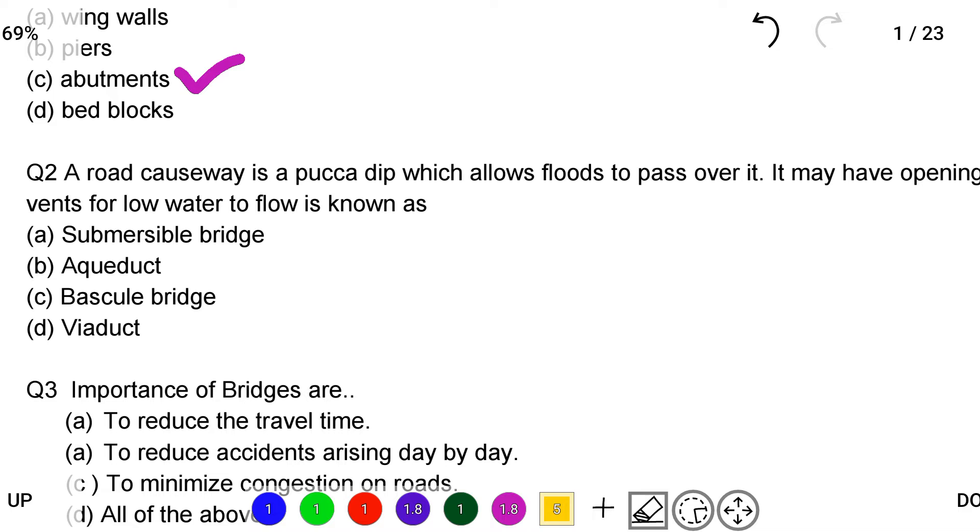Next question: a road causeway is a pucca dip which allows floods to pass over it. It may have openings or vents for low water to flow is known as option A submersible bridge, option B aqueduct, option C bascule bridge, option D viaduct. So the correct answer is option A submersible bridge.